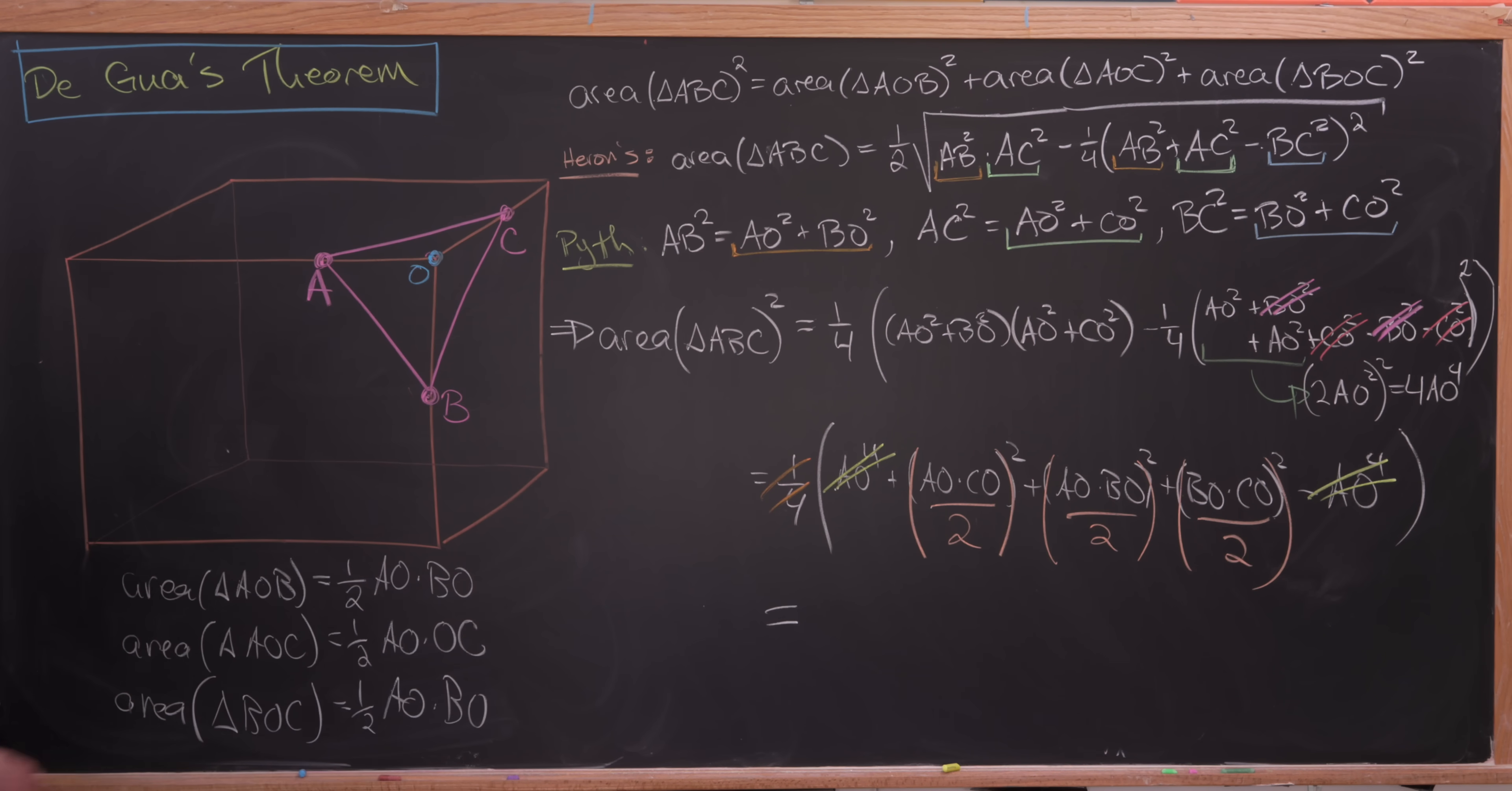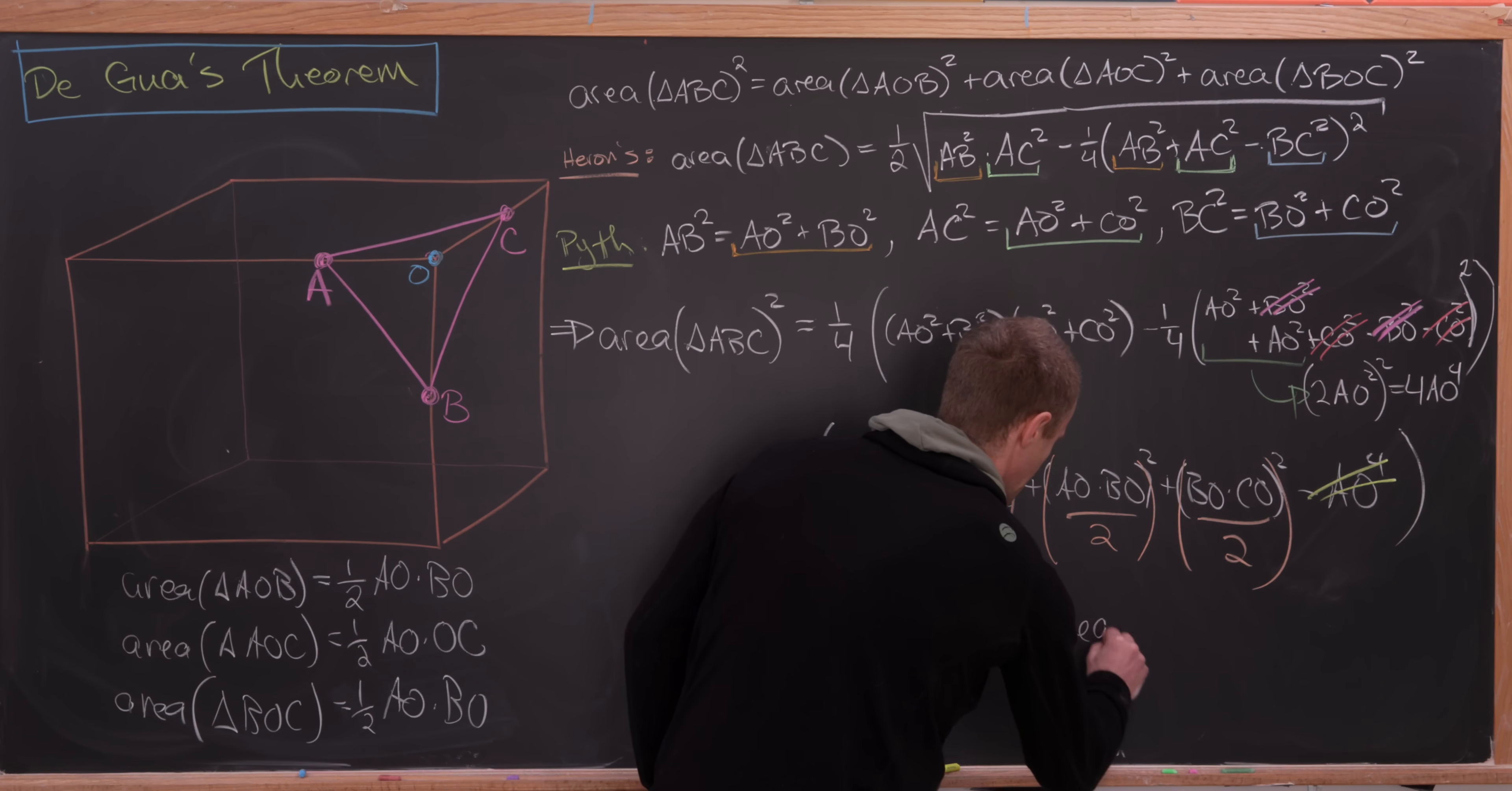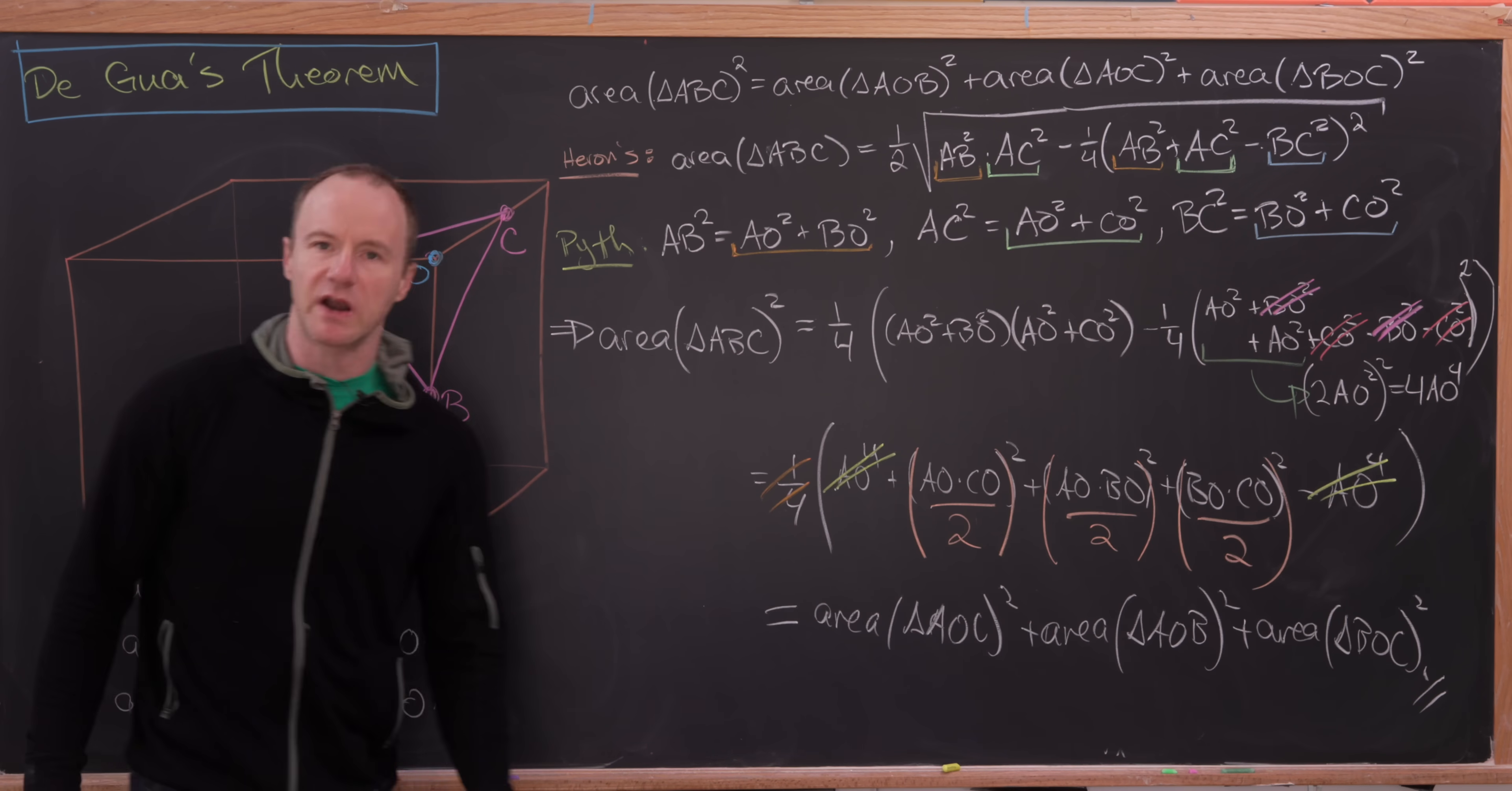This AO times CO over two squared is exactly the area of AOC. So here we have the area of triangle AOC quantity squared plus the area of triangle AOB quantity squared plus the area of finally triangle BOC quantity squared. But that's exactly where we wanted to end up.